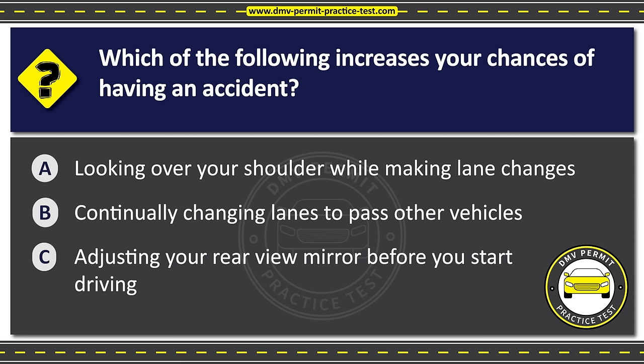Question forty-one. What does the red and white sign indicate? Option A: The road ahead is closed to traffic in all directions. Option B: Yield the right of way. Option C: The road is closed to traffic in your direction. The correct answer is Option C: The road is closed to traffic in your direction.